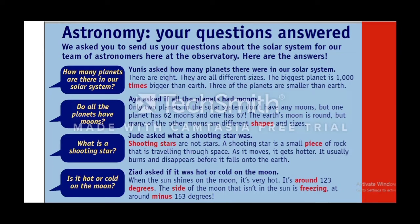It usually burns and disappears before it falls onto the Earth. Question four: is it hot or cold on the moon? Ziad asked if it was hot or cold on the moon. When the sun shines on the moon, it's very hot — around 123 degrees. The side of the moon not in the sun is freezing, at around minus 153 degrees.